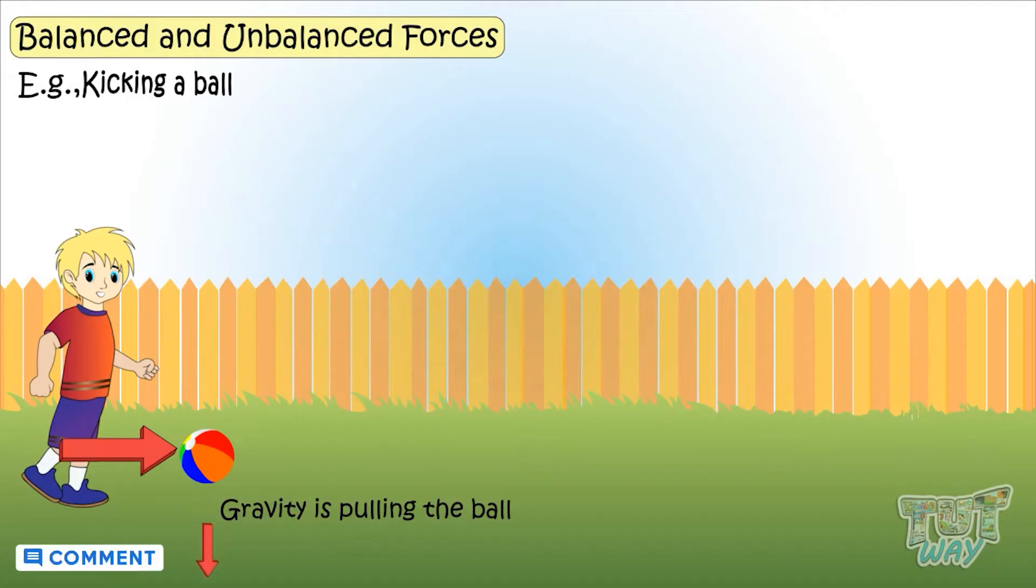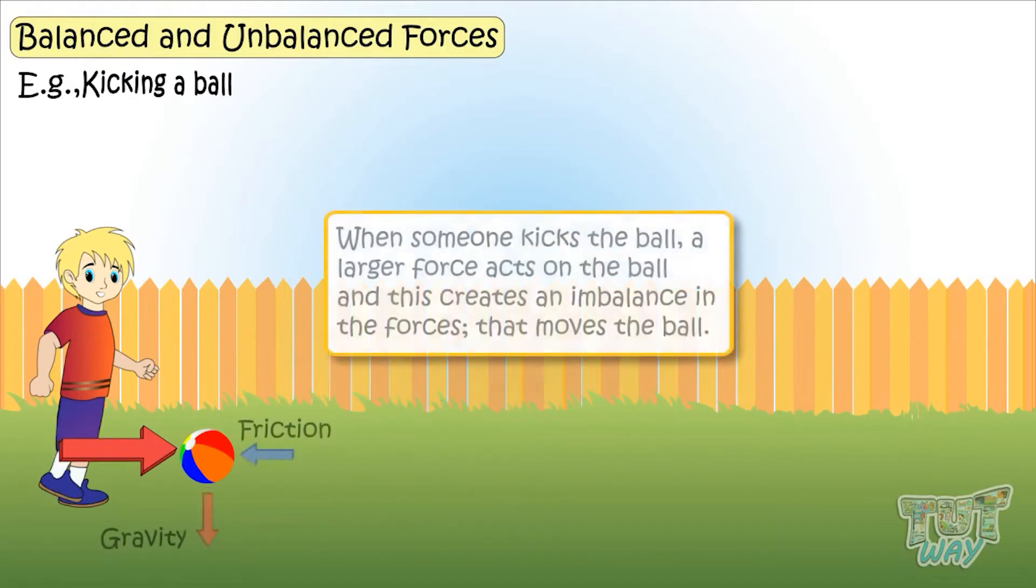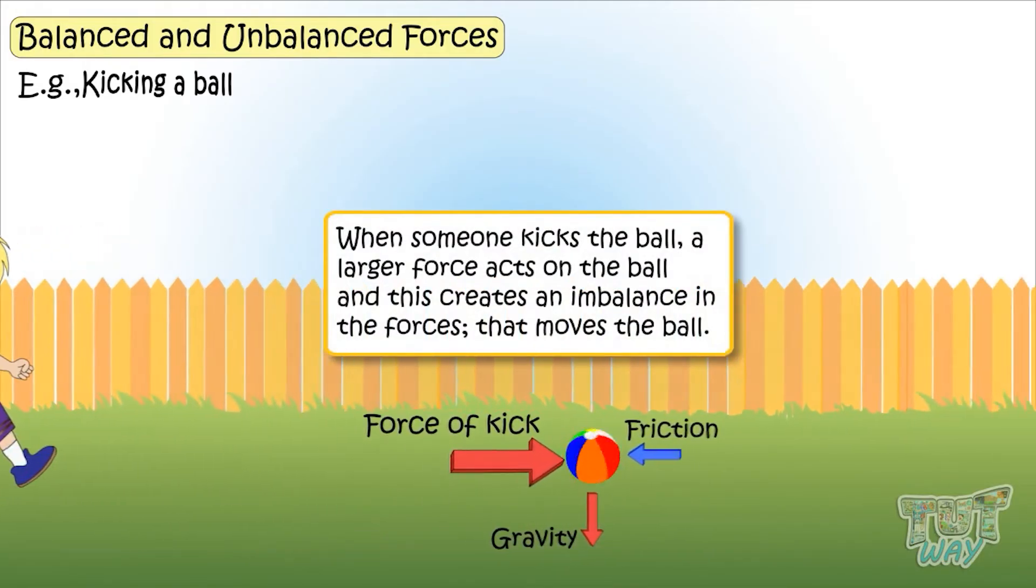That is, gravity is pulling the ball, ground is pushing the ball. That is, both the forces were equal and opposite. That is, balanced forces were acting on the ball. But when someone kicked it, a larger force acted on the ball.